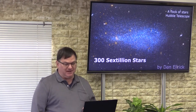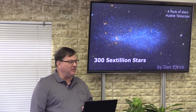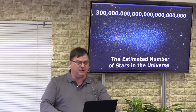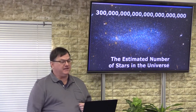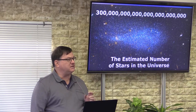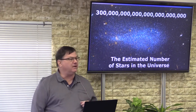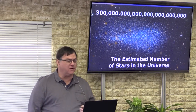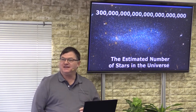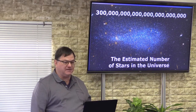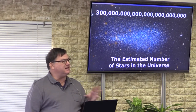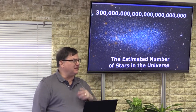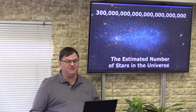For more scientific minds, it's three times 10 to the 23rd power, which might be a little bit easier. Here's that number written out. This is the number of stars that scientists currently estimate are in our universe. That's just a few of them there — that's called a flock of stars. This was a photo taken by the Hubble Telescope.